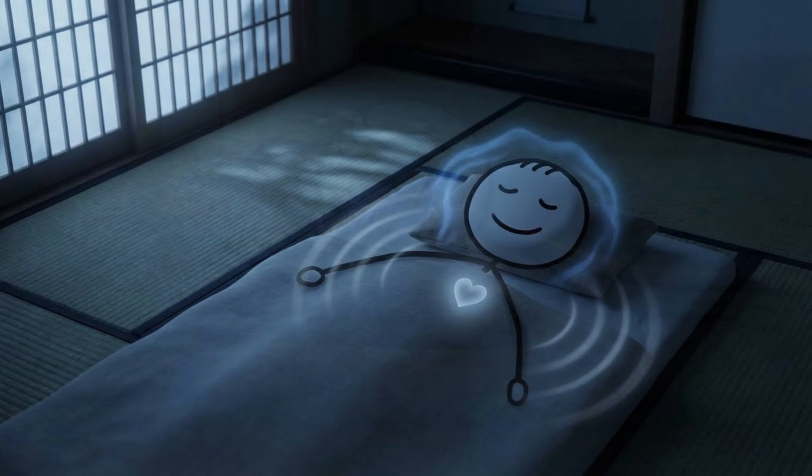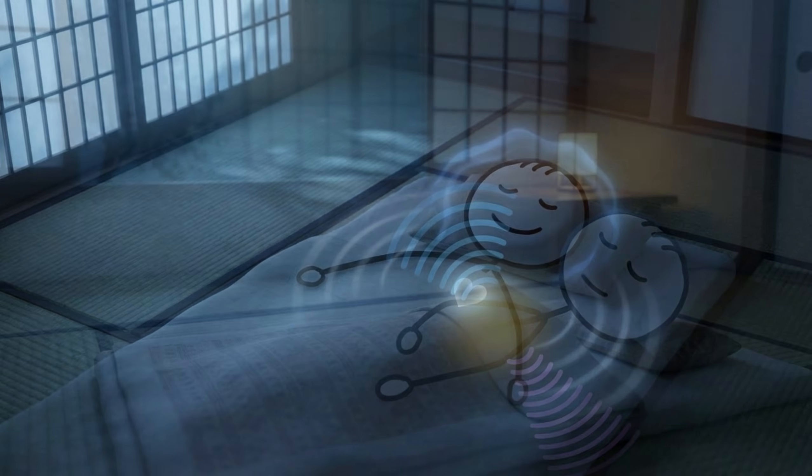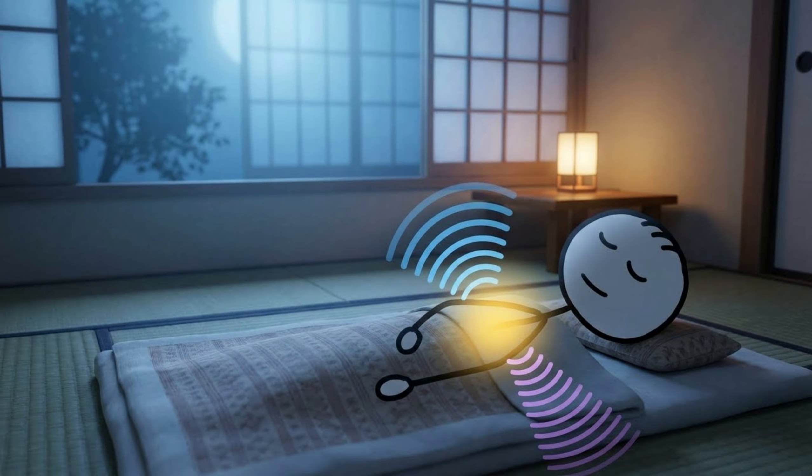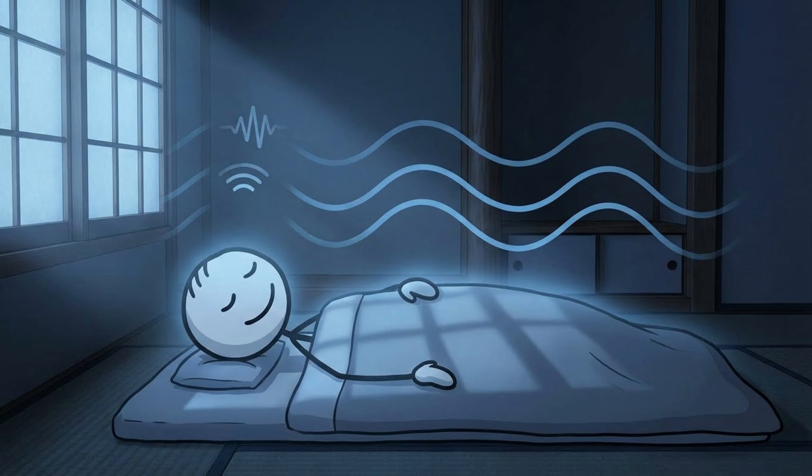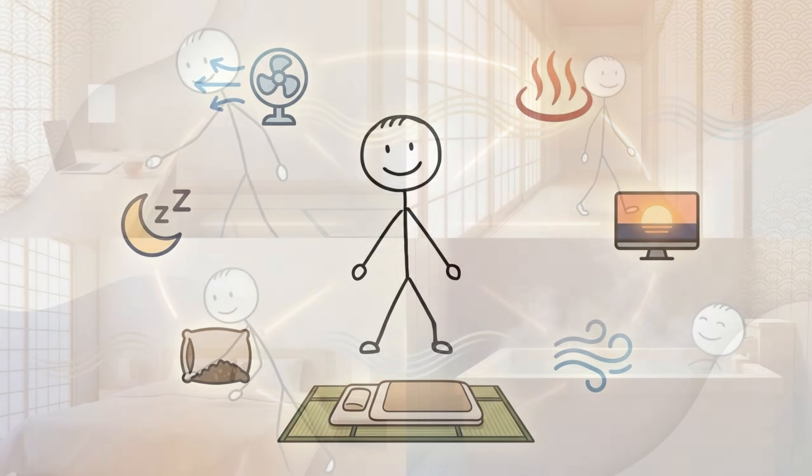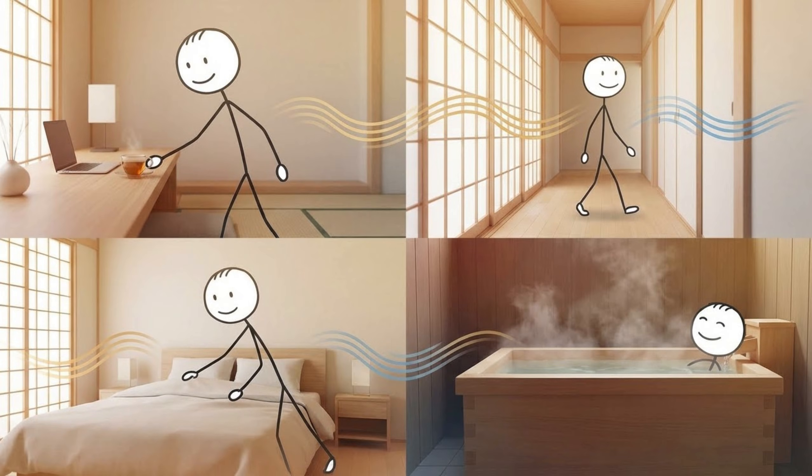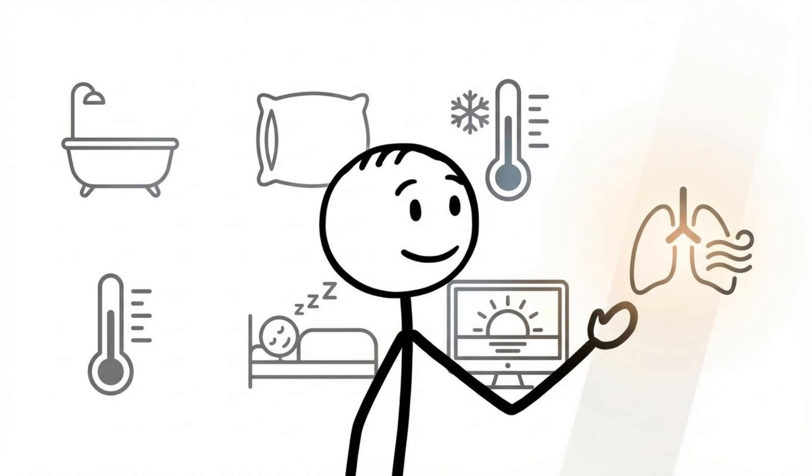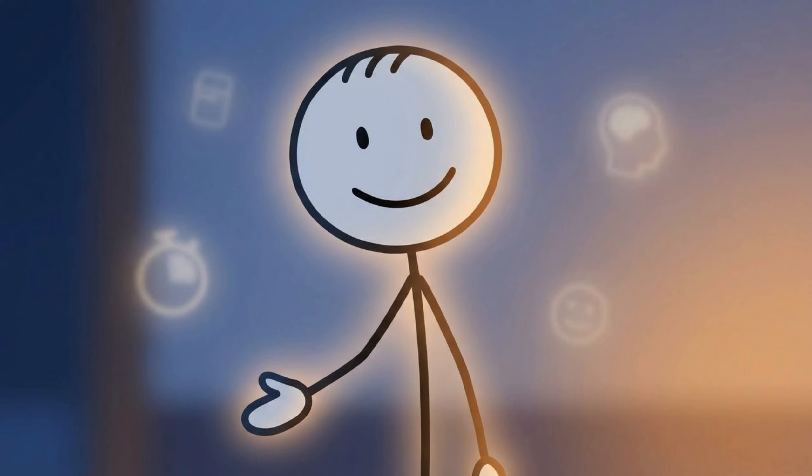You're still creating a calorie deficit, but you're doing it in a way that respects muscle as something worth keeping. For people already lifting weights, this matters even more. You're no longer asking your body to choose between strength and survival. You're reinforcing both. And that's why HIIT becomes especially valuable as body fat levels drop and progress slows. At that stage, fat loss isn't about burning more calories. It's about burning the right ones. The goal isn't exhaustion. The goal is efficiency. And once you understand that, cardio stops being something you fear or overuse, and starts becoming a controlled, intentional tool again.